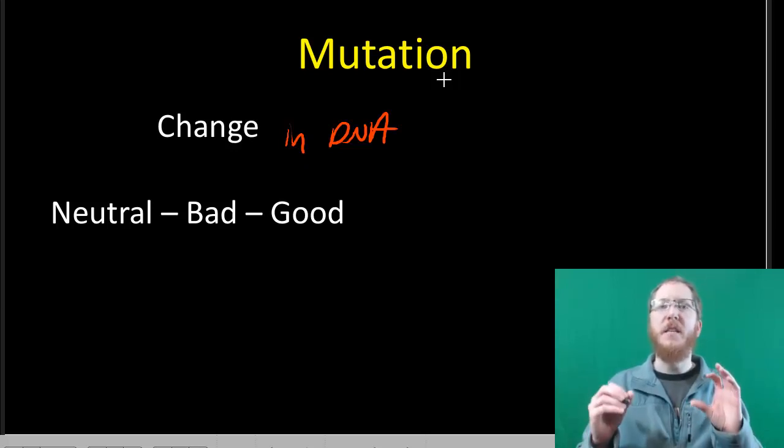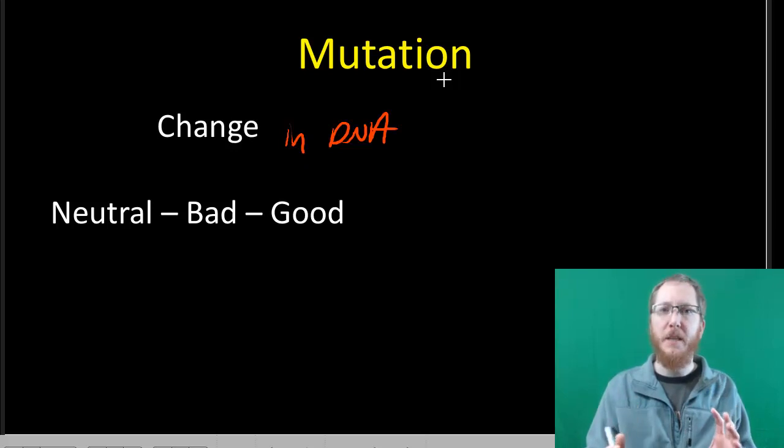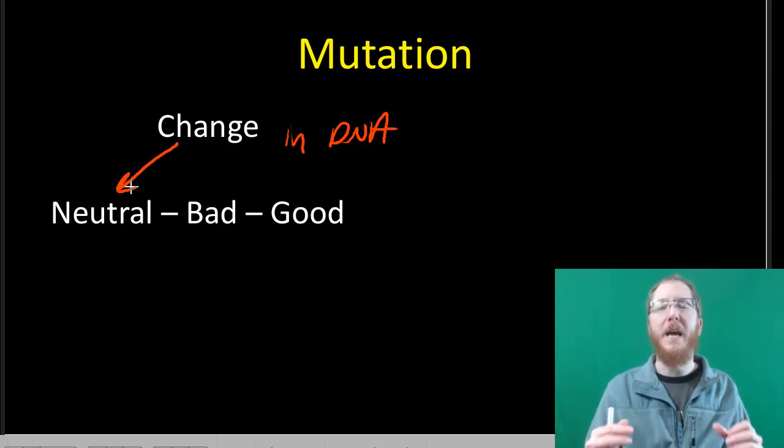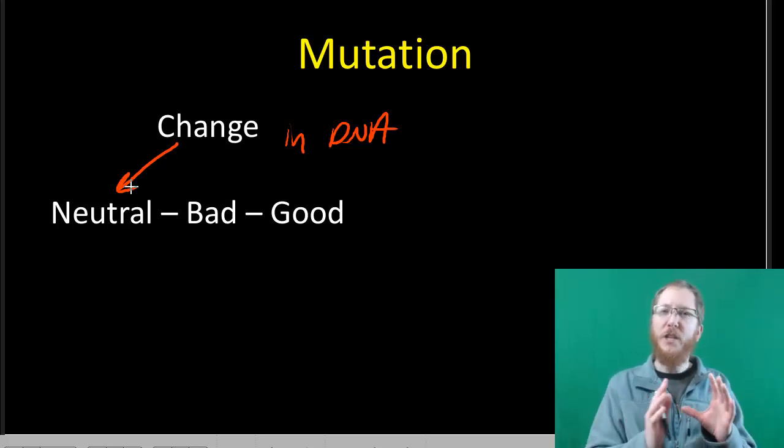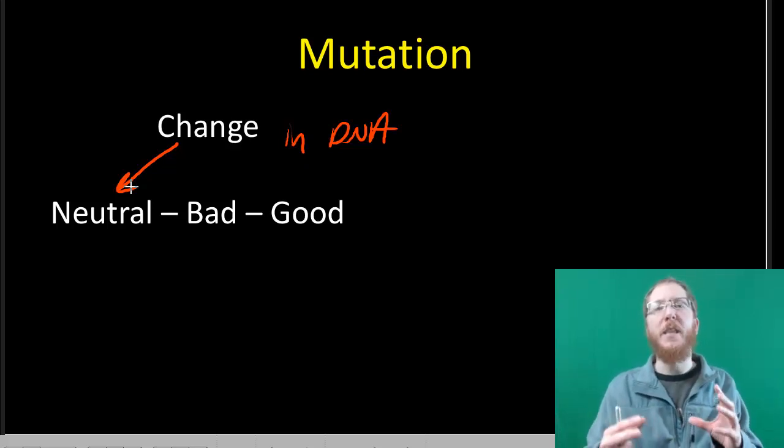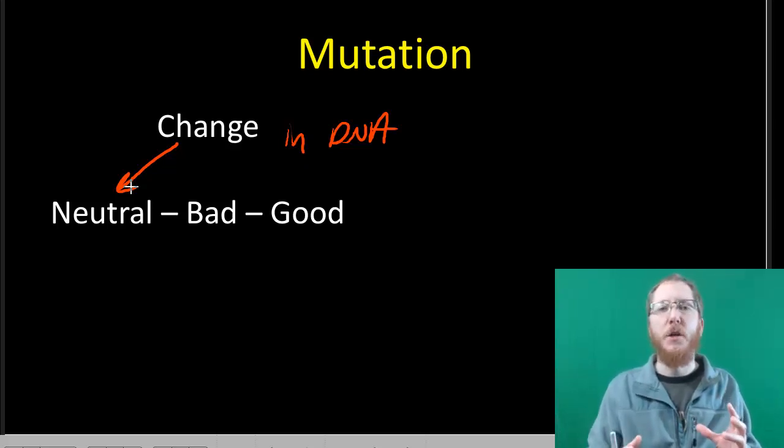Sometimes we change things in a sequence that does not code for a protein, like those introns we talked about. This is the most common type of mutation, where we ultimately don't end up changing anything overall. We change DNA that doesn't matter that much, or we change DNA in a way that we still get the same amino acid. Overall, it's kind of a no harm, no foul type thing.